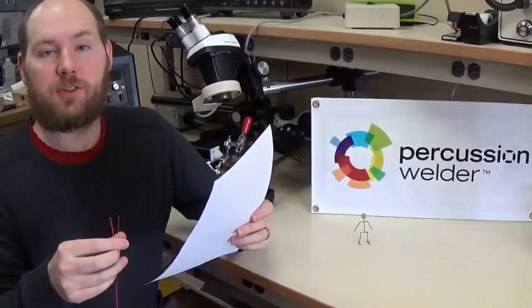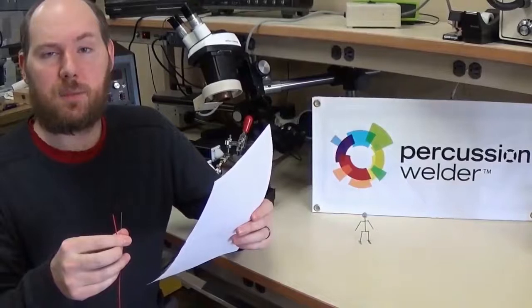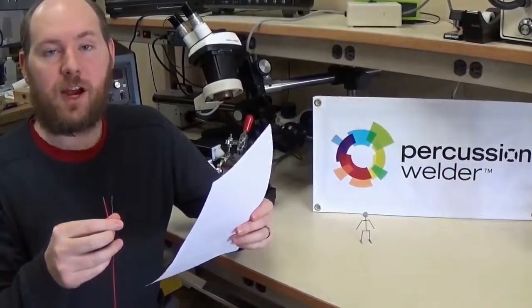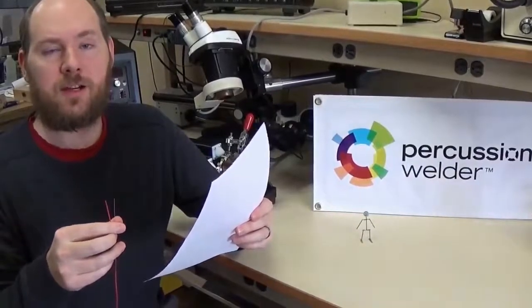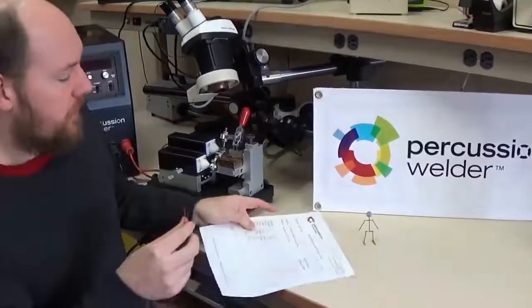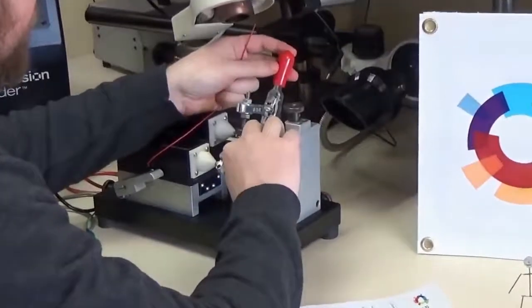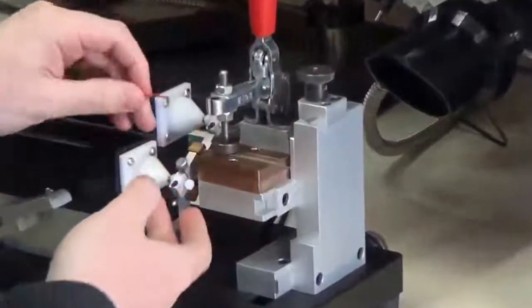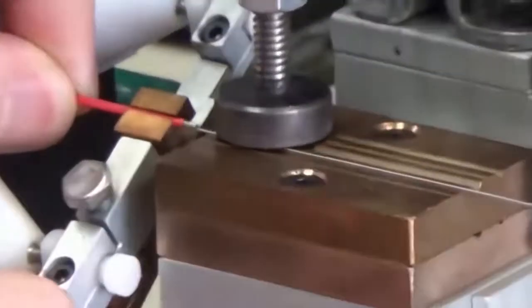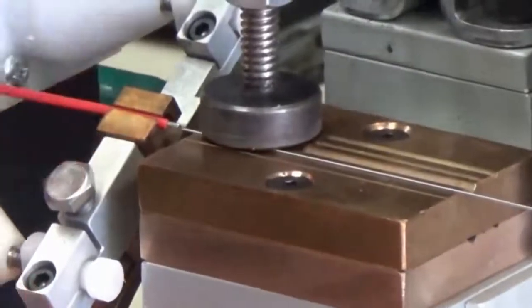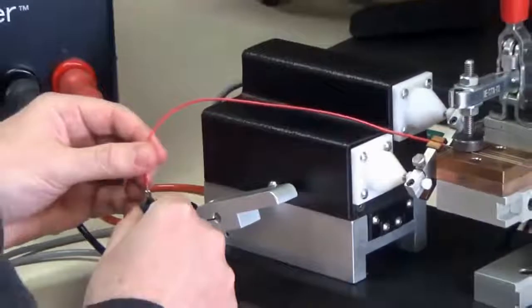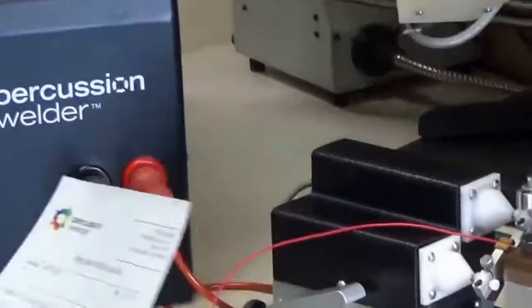Today I'm going to demonstrate the speed and ease of setup of the percussion welder. I have stranded copper wire, solid Hasteloy wire and a weld schedule. First I'm going to load the Hasteloy wire into the stationary wire holder. I'm going to load the copper wire into the movable wire holder. And ground the copper wire because it's insulated.